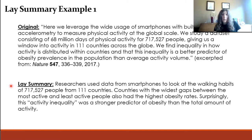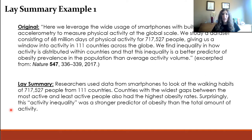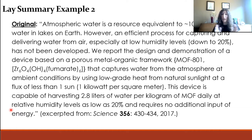They studied 68 million days of physical activity for 717,000 people across 111 countries, finding that inequality in activity distribution within countries was a better predictor of obesity prevalence than average activity volume. That's a perfectly fine scientific abstract. My lay summary reads: 'Researchers used data from smartphones to look at the walking habits of 717,000 people from 111 countries. Countries with the widest gaps between the most and least active people also have the highest obesity rates. Surprisingly, this activity inequality was a stronger predictor of obesity than total amount of activity.'